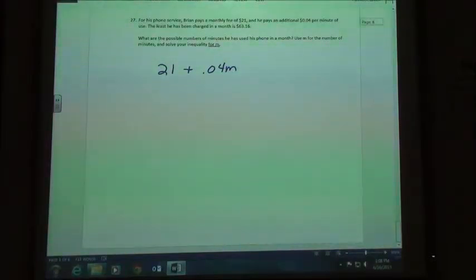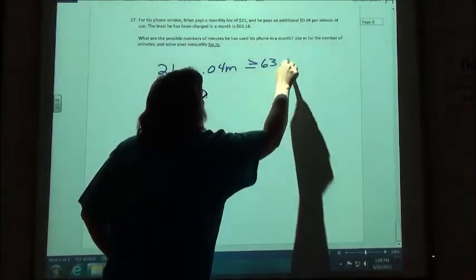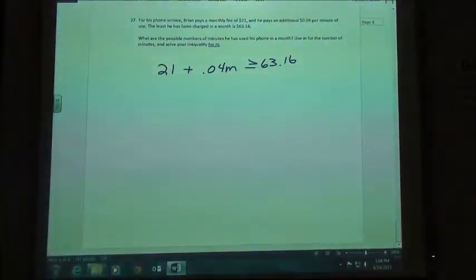So if the least he's been charged is $63.16, that means that's the least he's been charged and that's the lowest number, right? So it's going to be greater than or equal to $63.16. So the least is the lowest amount, it could be more than that.